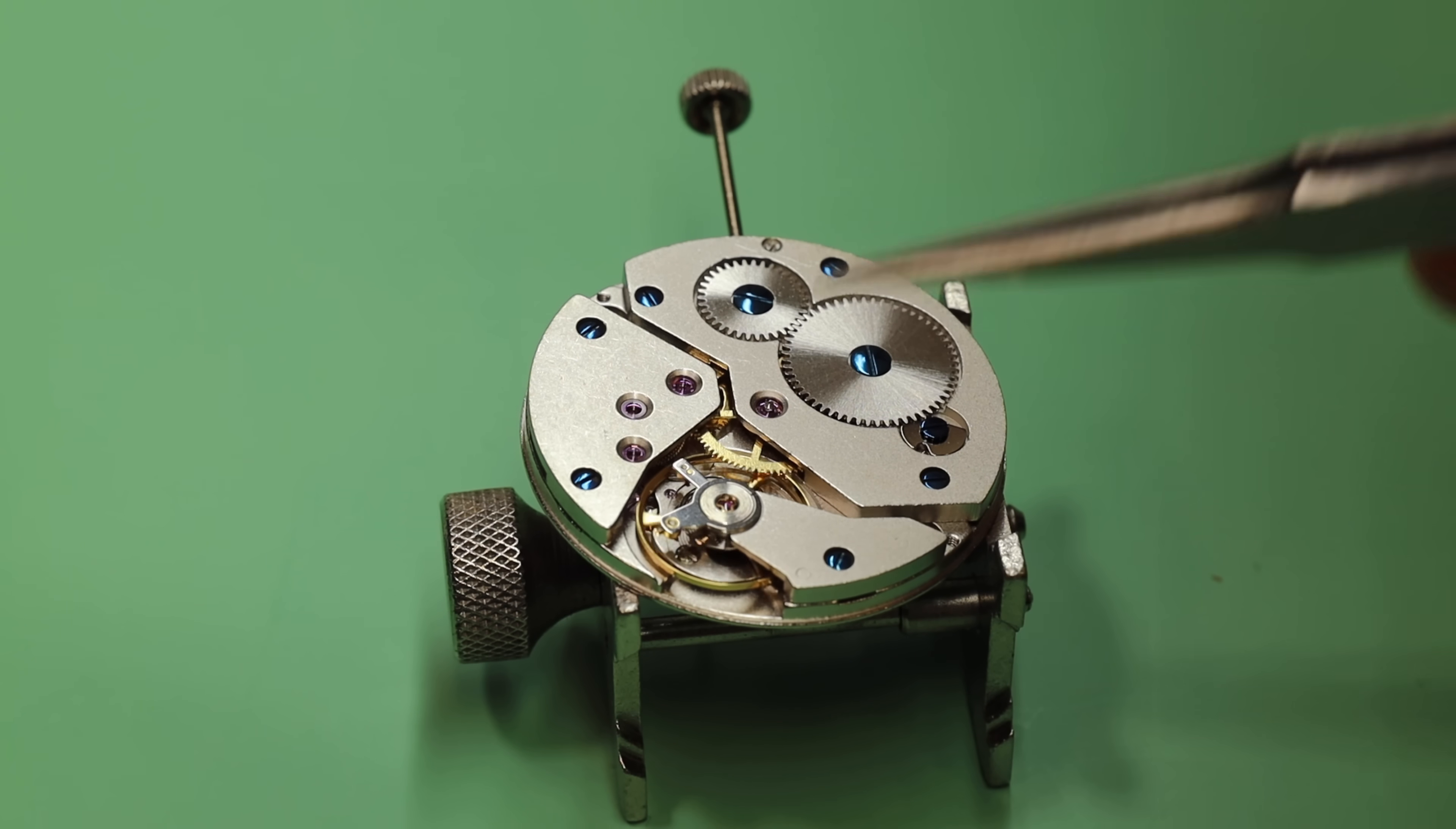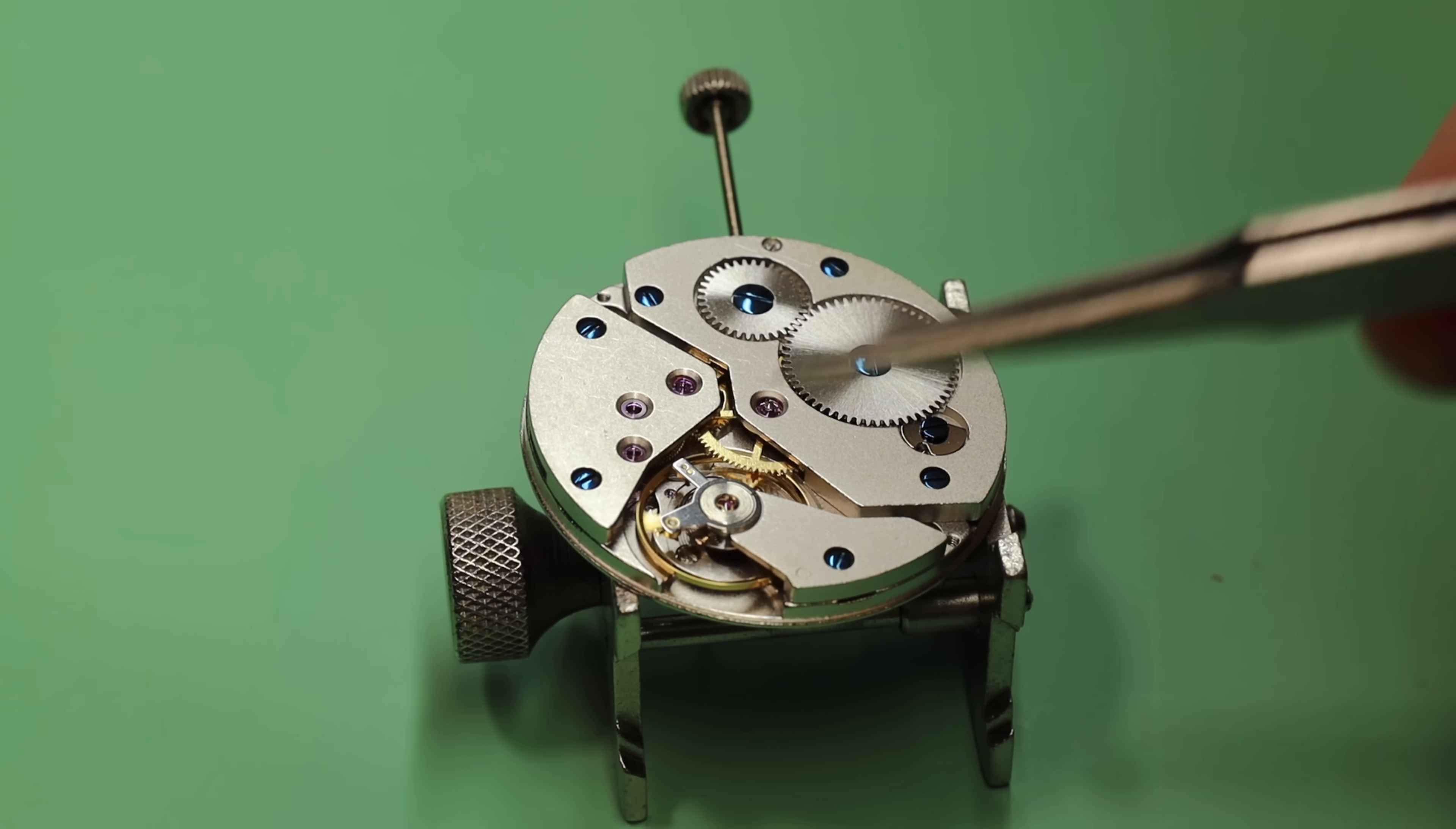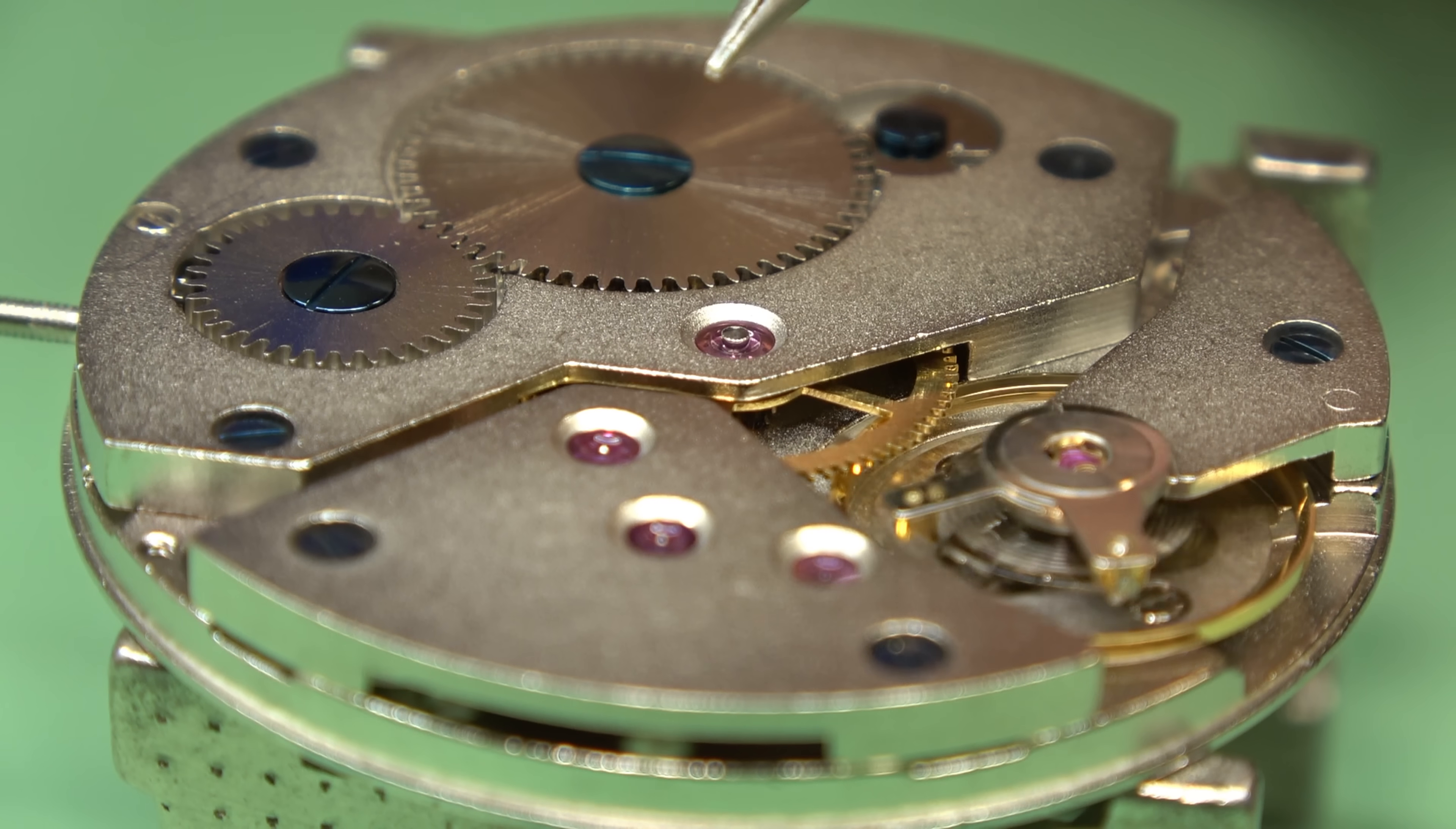The trains always go one way. The flow of power is from the mainspring all the way down through to the balance. You have the escape wheel attached to the fourth wheel, which is powering the seconds hand. So it's just important to note, everything on this side never goes backwards. But for intents and purposes, everybody here always goes in one direction, which leads us to the dial side.